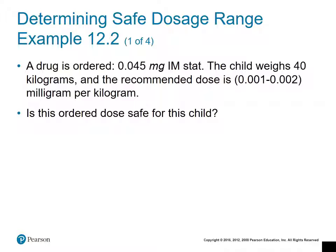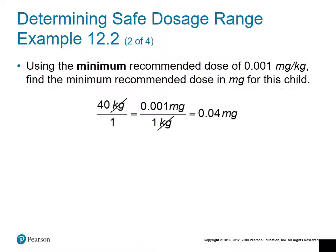In this example we determine if an order is safe for a child based on their weight. The order is 0.045 milligrams IM stat, and the child weighs 40 kilograms. The recommended dose is between 0.001 and 0.002 milligrams per kilogram of body weight. We'll use the minimum and maximum recommended doses to establish the safe dosage range for this specific child.